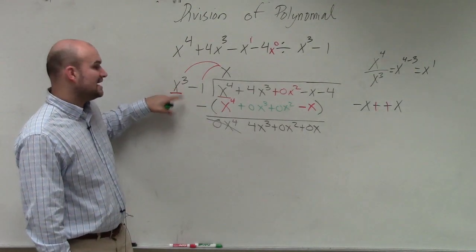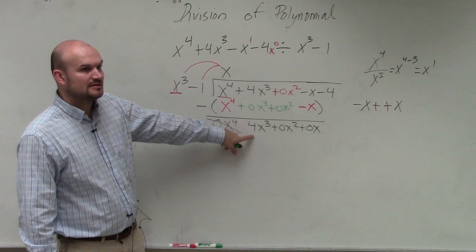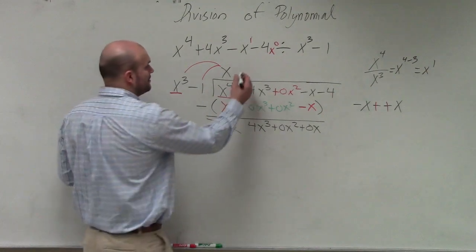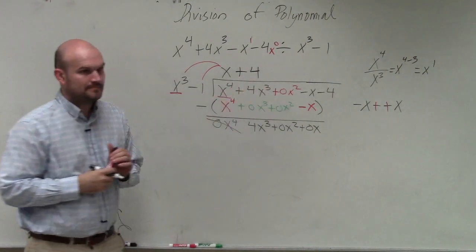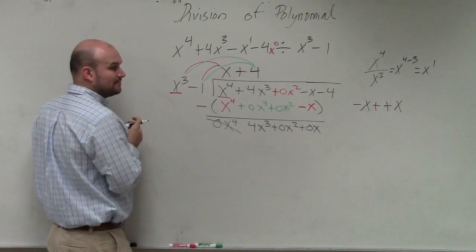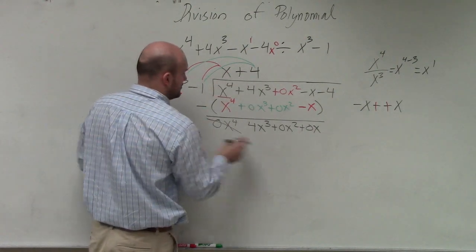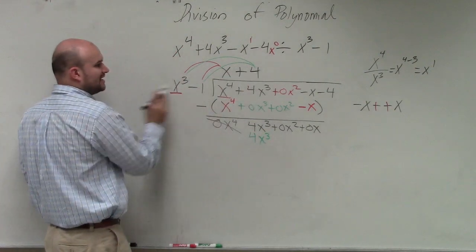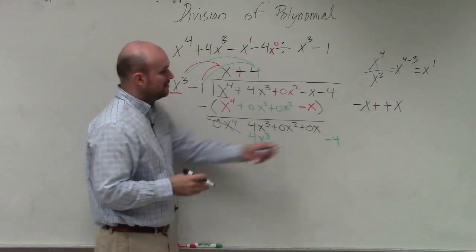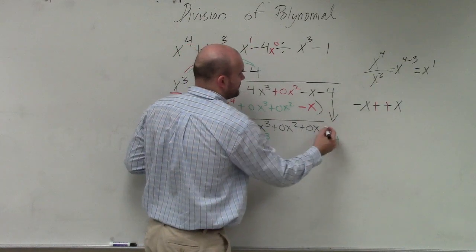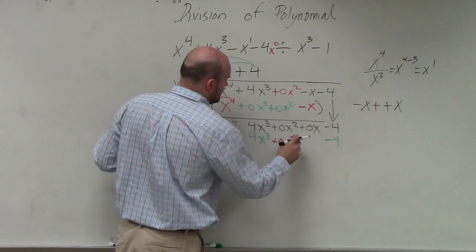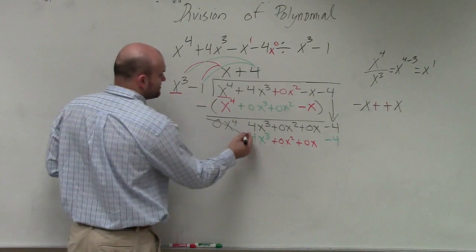So now we do the whole process again. x cubed divides into 4x cubed how many times? 4 times. Plus 4. Then we multiply back again. 4 times x cubed, 4 times negative 1. 4 times x cubed is 4x cubed. 4 times negative 1 is negative 4. So I'm going to put that over here. I can't subtract the negative 4, so I'm going to bring down this negative 4. I can again use these as space values.